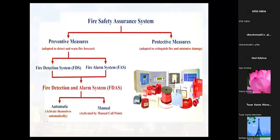Fire safety assurance systems have two approaches: preventive measures and protective measures. Preventive measures are adopted to detect and warn of fire hazards, whereas protective methods are adopted to extinguish fire and minimize damage.